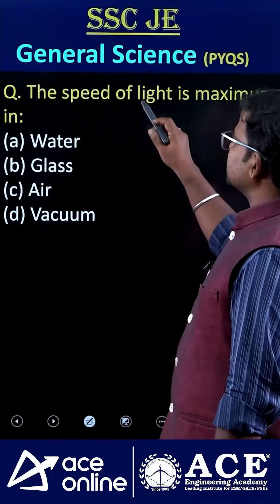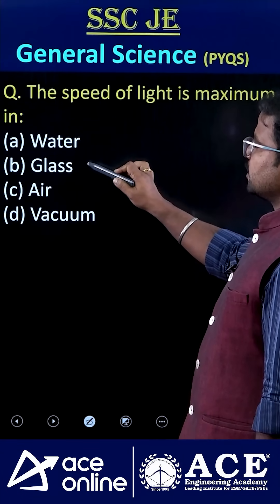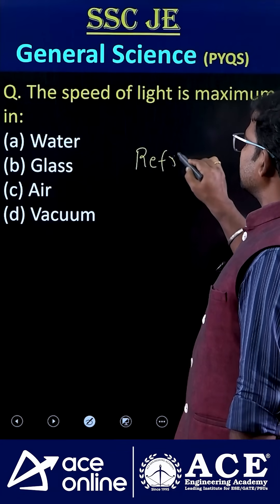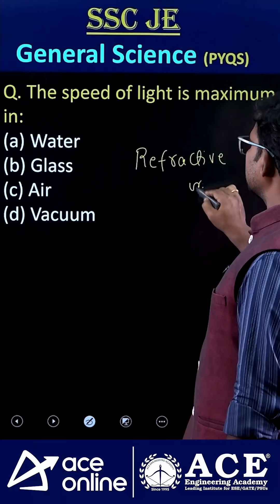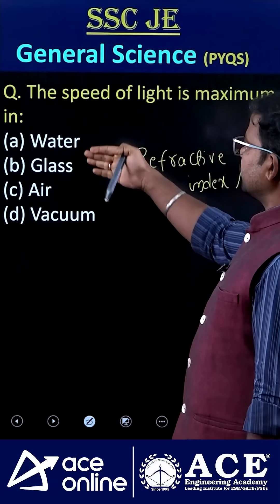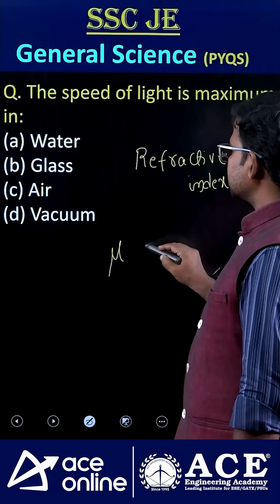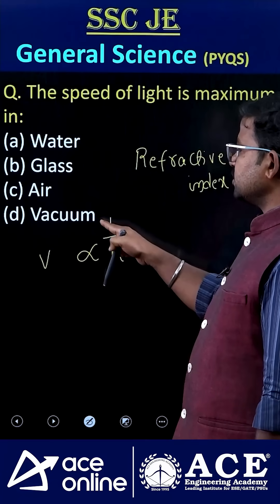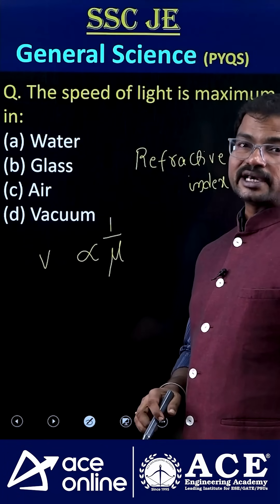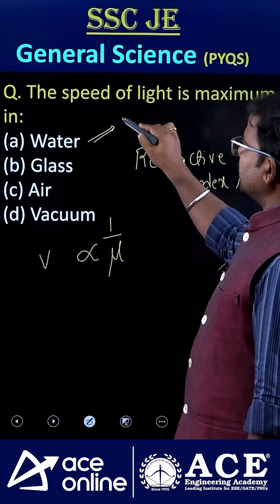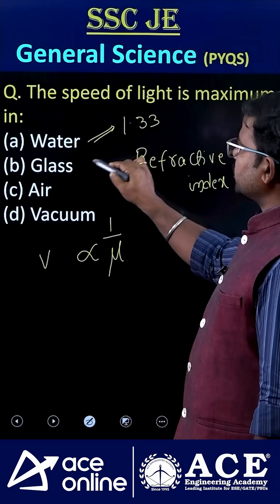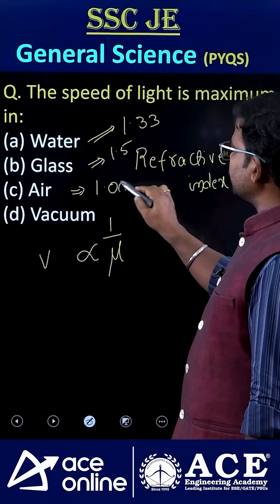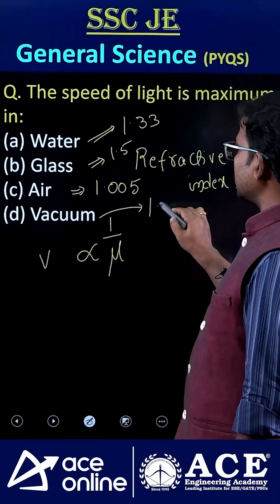Welcome to Ace Online. The speed of light is maximum in water, glass, air, or vacuum — based on refractive index. Refractive index is inversely proportional to the velocity of light, so if refractive index decreases, velocity of light is maximum. The refractive index of water is 1.33, glass is 1.5, air is 1.005, and vacuum is 1.